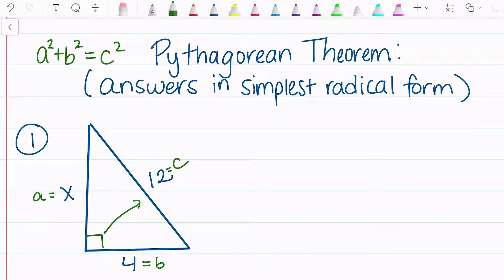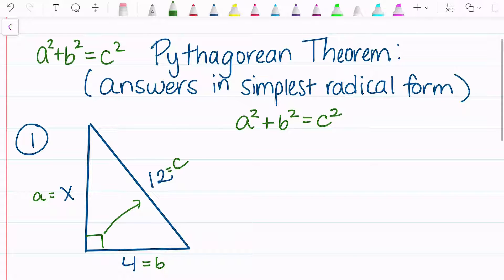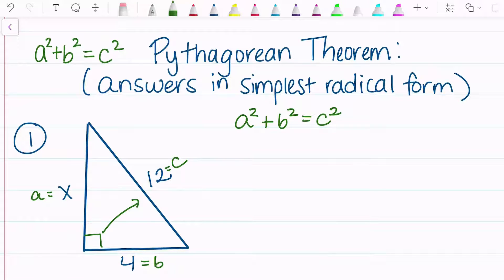I'm going to set up the Pythagorean theorem: a squared plus b squared equals c squared. I always tell my students that it's important to write your formula every time because it helps you memorize it in the long run. So I have a squared — I'm solving for x — b is 4, and c is 12.